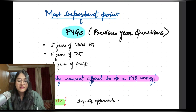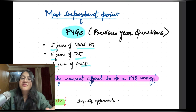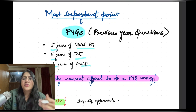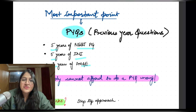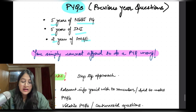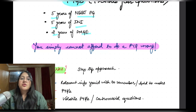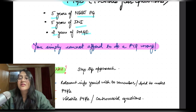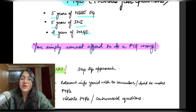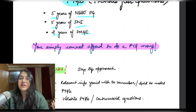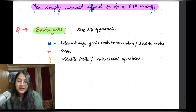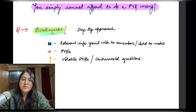Most important: how many years of PYQs do you need to solve? The answer is five plus five plus two — five years of NEET PG, five years of AIIMS, and two years of FMG. In Marrow, if you're on the plan, change the mode to find FMG questions. You simply cannot afford to get a PYQ wrong — especially in INI, where they repeat questions as-is. If you get those wrong but two lakh students get them right, your rank will drastically drop.